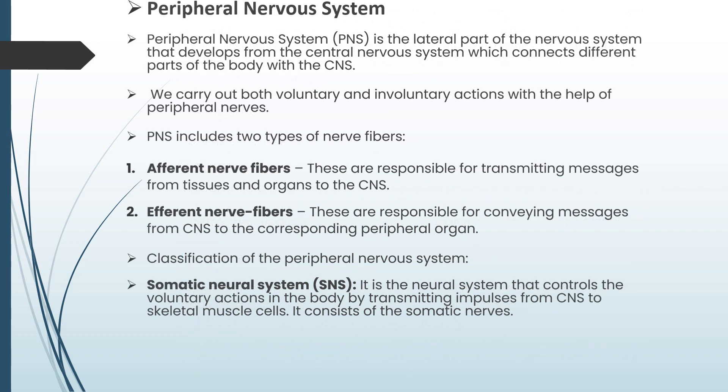Peripheral nervous system is the lateral part of the nervous system that develops from the central nervous system, which connects different parts of the body with the central nervous system. We carry out both voluntary and involuntary actions with the help of peripheral nerves. PNS includes two types of nerve fibers. Afferent nerve fibers are responsible for transmitting messages from tissue and organs to the central nervous system. Efferent nerve fibers are responsible for conveying messages from CNS to the corresponding peripheral organ. Somatic neural system is a neural system that controls the voluntary actions in the body by transmitting impulses from CNS to skeletal muscle cells. It consists of the somatic nerves.